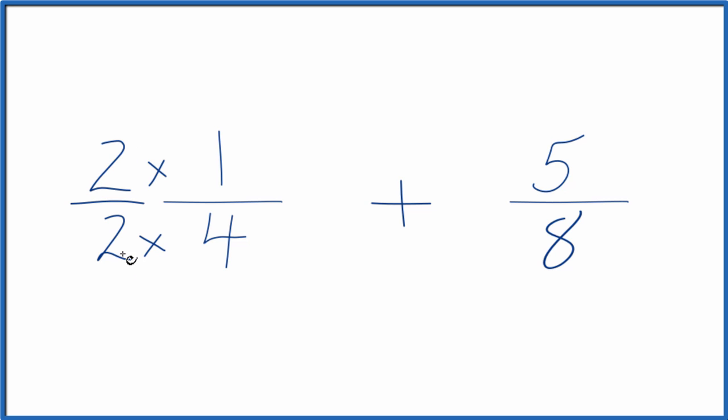That's because 2 divided by 2 equals 1. So we're just multiplying 1/4 by 1. We don't change the value, just the way it's represented.